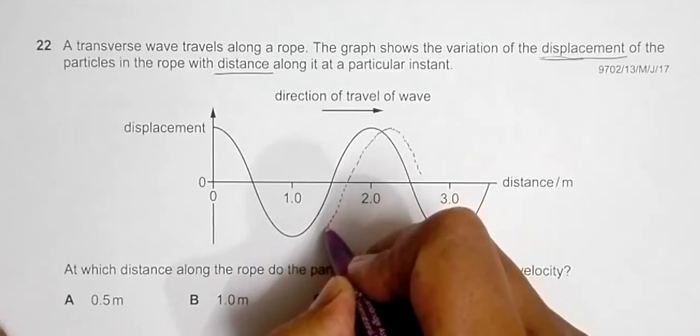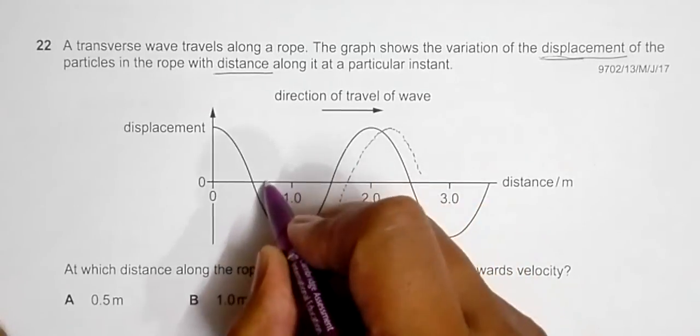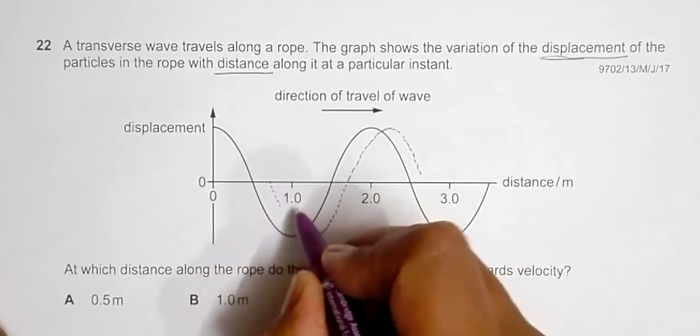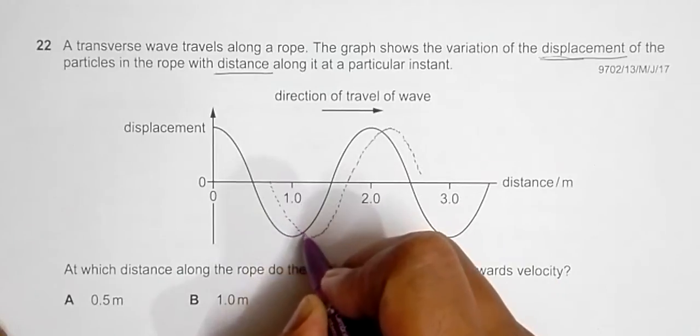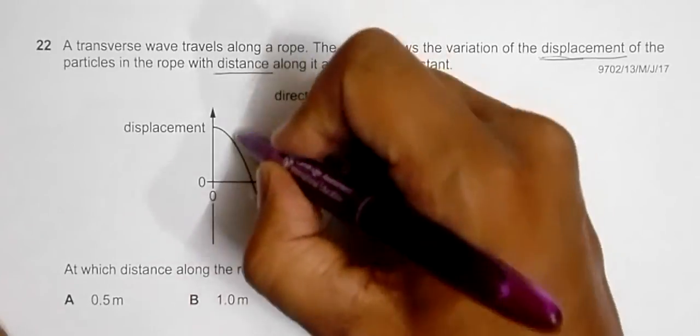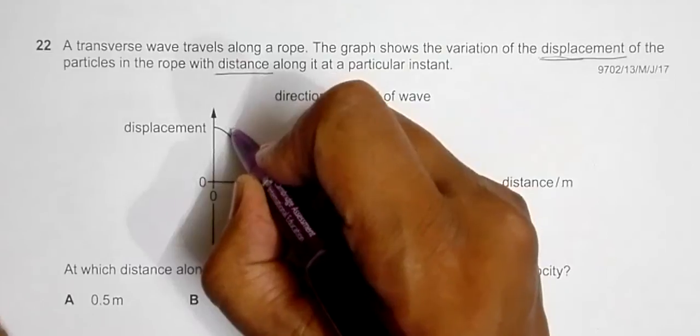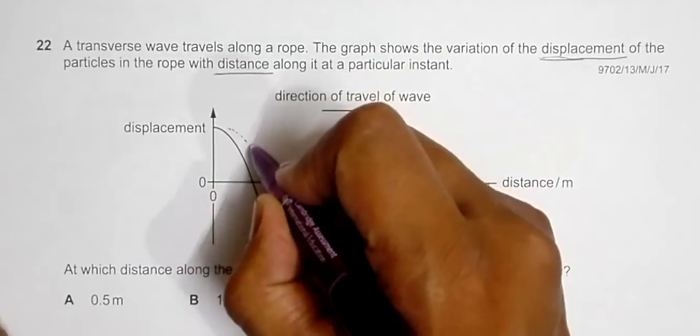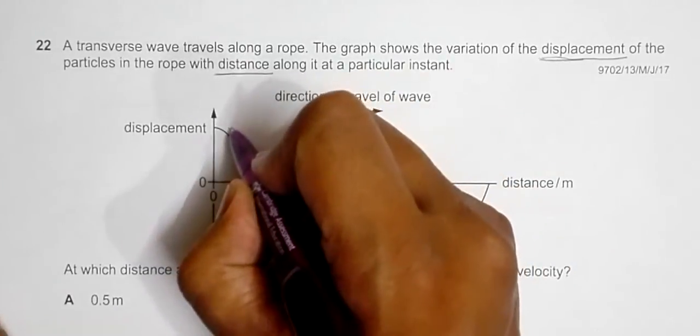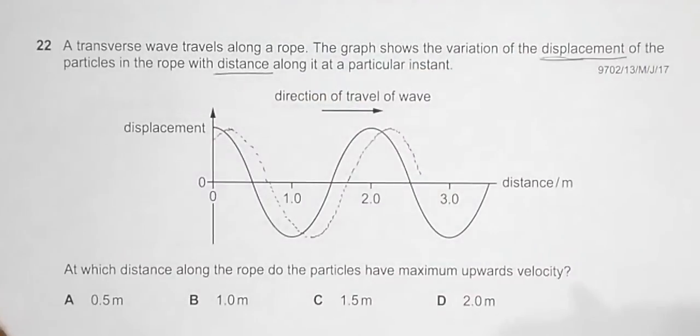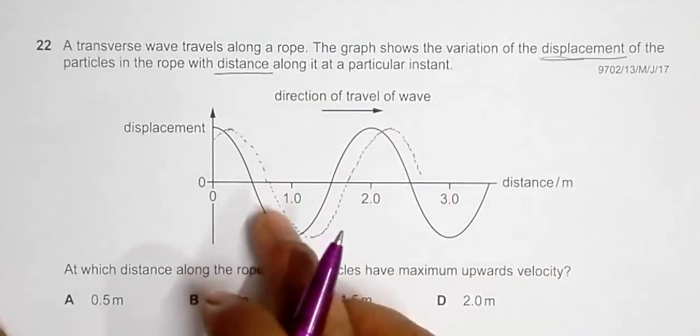So we can draw it somewhat like this. From here it will be somewhat like this and then it goes like this. So after a particular instant, the structure of the wave will be somewhat like this. It's not exactly correct but it's workable.